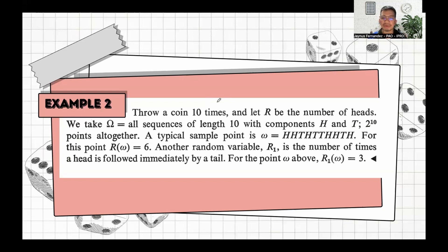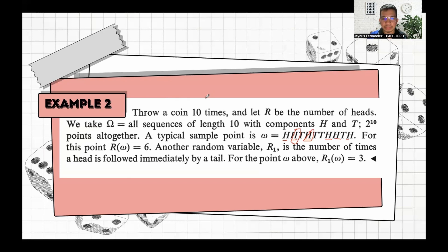For another random variable R1, defined as the number of times a head is followed immediately by a tail — based on the given typical sample point, R1 equals 3, since there are 3 instances where a head is followed immediately by a tail.